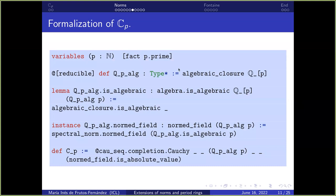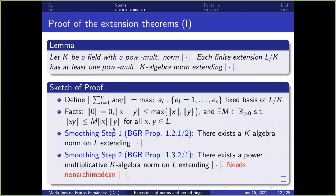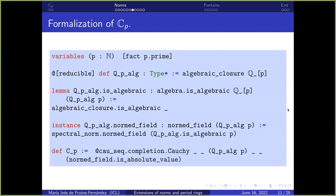We fix a prime number p, define the algebraic closure of Qₚ, and we already have in Mathlib the fact that this extension is algebraic. I define a norm-field instance on the algebraic closure of Qₚ by saying the norm comes from the spectral norm on the algebraic closure. Then, once I have the norm-field instance on Qₚ-algebraic, I define Cₚ as the completion of Qₚ-algebraic with respect to this p-adic norm.